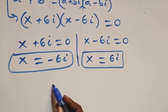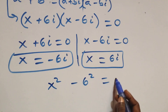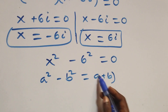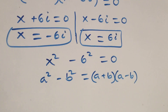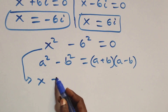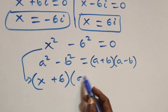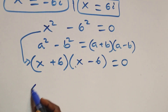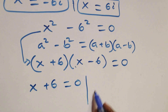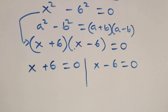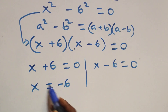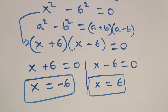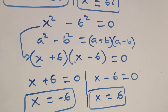Solving the second case: x² − 36 = 0. This follows the difference of squares identity a² − b² = (a + b)(a − b). So this becomes (x + 6)(x − 6) = 0, giving two possible cases: x + 6 = 0 or x − 6 = 0. Therefore x = −6, which is a real solution, or x = 6, which is also a real solution — making two real solutions.